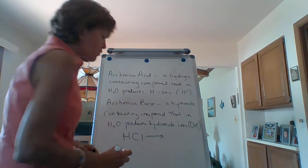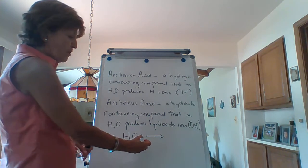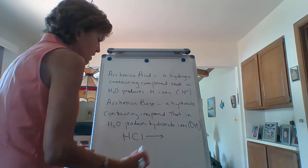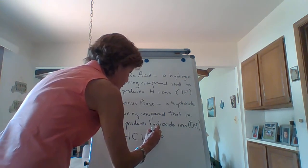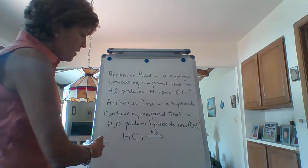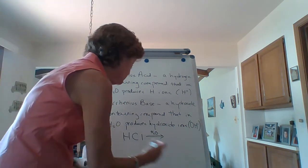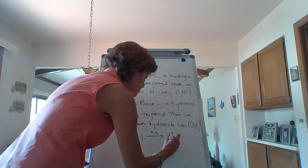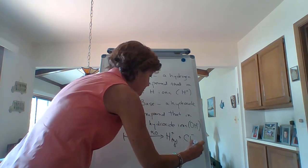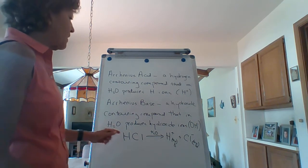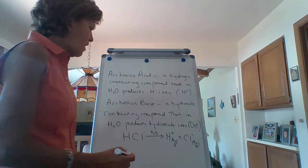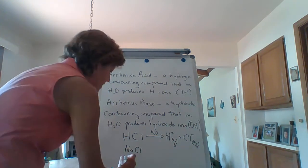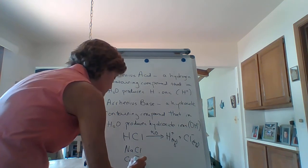You could either put water over the arrow or write AQ, which means it is dissolved in water — it's an aqueous solution. So HCl in water will break apart, dissociate into a hydrogen ion (aqueous) plus a chloride ion (aqueous). So by definition, this would be an acid. Obviously if you have something like this without a hydrogen, it's not an acid.